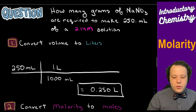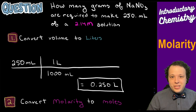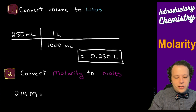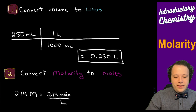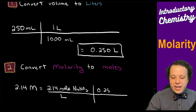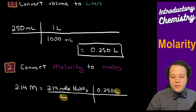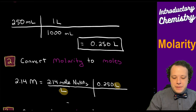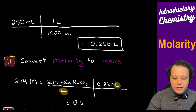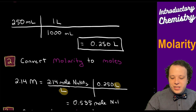To convert molarity to moles, we need liters. Since we have 2.14 molarity, that represents 2.14 moles per one liter. To find how many moles we have, multiply 2.14 by 0.250 liters — liters cancel — leaving us with 0.535 moles of sodium nitrate.